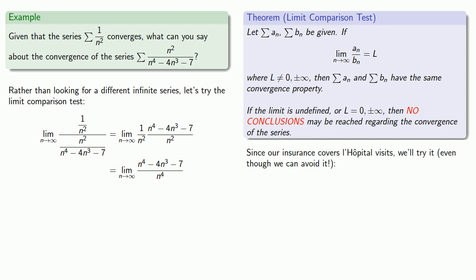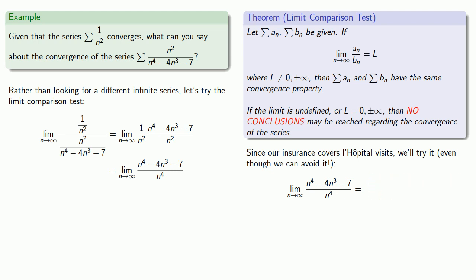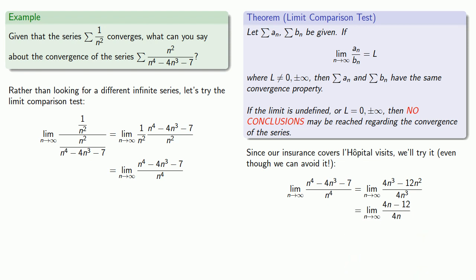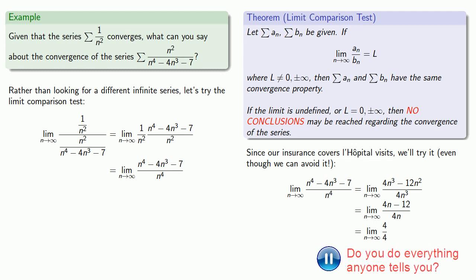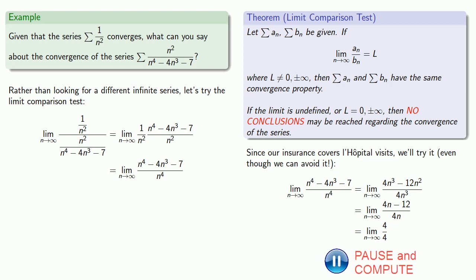Our insurance covers a L'Hôpital's visit, so we'll try it even though we can avoid it. Numerator and denominator both go to infinity, so we find the derivative of the numerator and denominator. We simplify a little bit. They still both go to infinity, so we apply L'Hôpital's rule again. Remember, L'Hôpital's rule does not actually give a limit — we still have to find the limit as n goes to infinity, which will be 1.